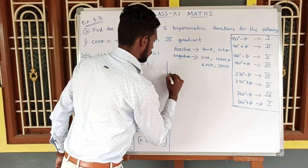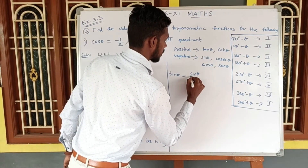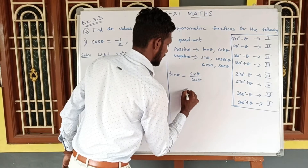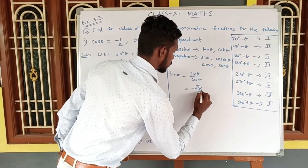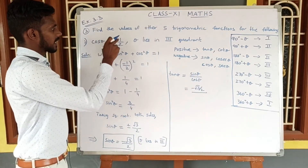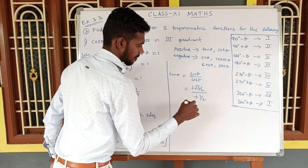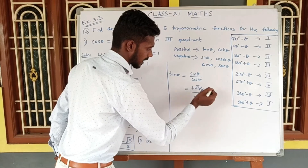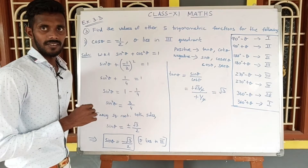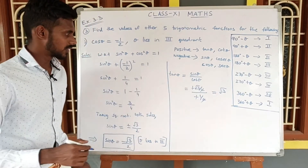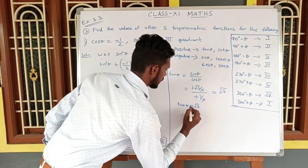Now let's find tan θ. Tan θ is nothing but sin θ by cos θ. Sin θ = −√3/2 divided by cos θ = −1/2. Simplifying: the 2s cancel, giving root 3 by 1 = root 3. So tan θ = √3.